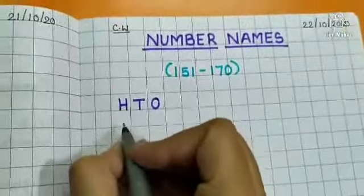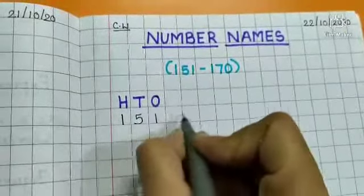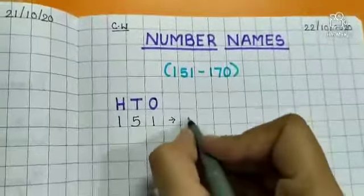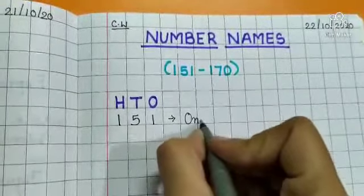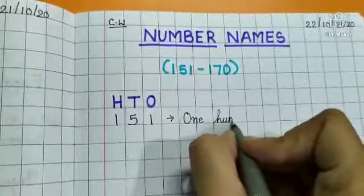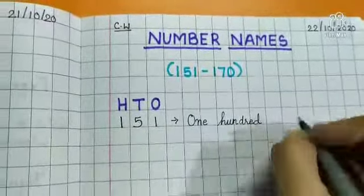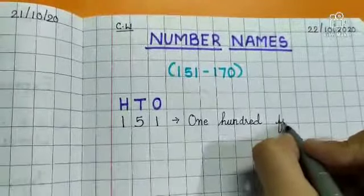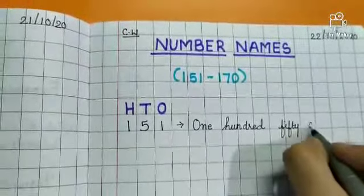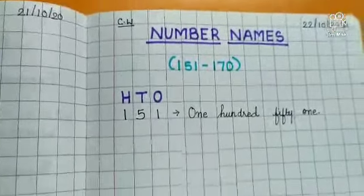Now start writing 151. Spelling: O-N-E 1, H-U-N D-R-E-D 100, F-I-F-T-Y 50, O-N-E 1. 151.